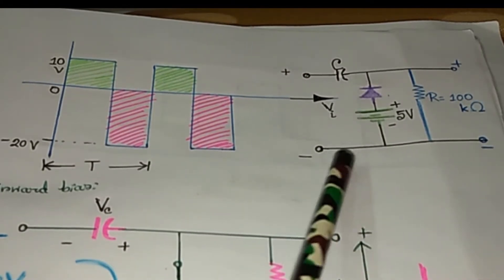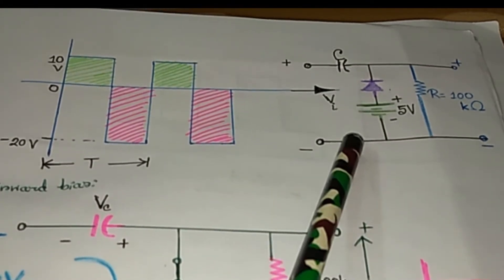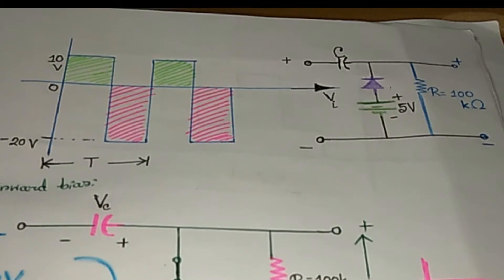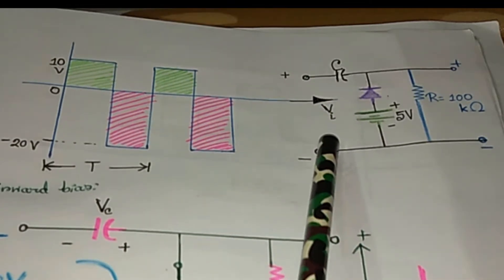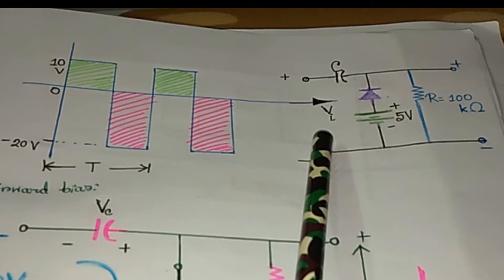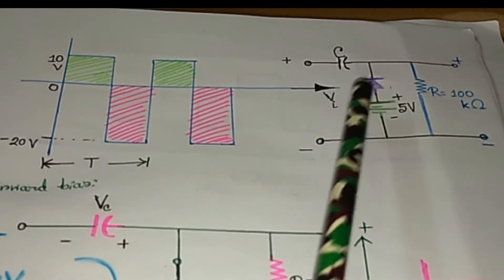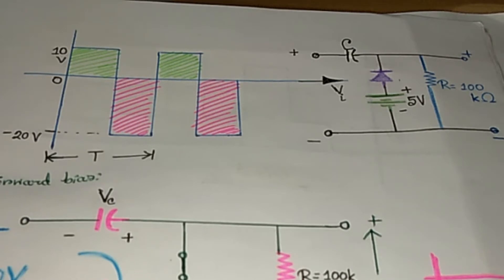Suppose a type of wave enters the input of a clamper circuit — we need to find out what type of wave we get at the output. To solve these problems, we first need to find out during which half cycle — either the positive half cycle or the negative half cycle — the diode will be in forward bias condition.